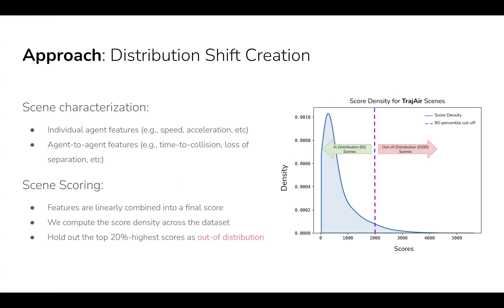For distribution shift creation, there are two important categories: individual agent features, such as positional data, speed, acceleration, and jerk; and agent-to-agent features, such as time-to-collision, loss-of-separation, and deceleration rate. For the scene score, we combine these features linearly into a final score, then compute a score density across the dataset, and the top 20% highest-scoring scenes are held out as out-of-distribution.